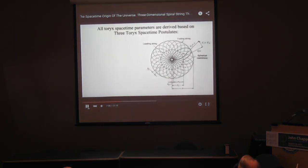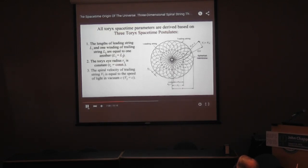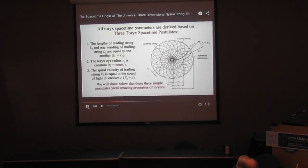All 2X spacetime parameters are derived based on three 2X spacetime postures. First, the 2X lengths of leading string L1 and one winding of trailing string L2 are equal to one another. Second, the 2X inner radius R0 is constant. And third, the spiral velocity of trailing string B2 is equal to the speed of light in vacuum C. We will show below that these three simple postures yield amazing properties of Tauruses.